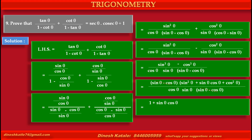In the remaining bracket, sin squared θ plus cos squared θ becomes 1, so numerator becomes 1 plus sin θ cos θ, upon the remaining denominator cos θ into sin θ. Separating the denominator for the two terms of the numerator, we get the first term as 1 upon cos θ into sin θ, that is sec θ into cosec θ.